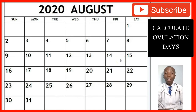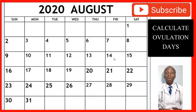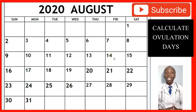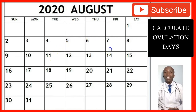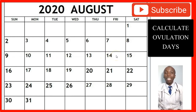Specifically, the ovulation date for a 25-day cycle is on the 14th. In this video today, you have learned the ovulation cycle and the days when you are most likely to be ovulating. For a 25-day cycle, you count from the 1st day that you saw your periods, count 14 days, and on the 14th day, that is when you are most likely to be ovulating. Let me know if you have any questions down below in the comments.